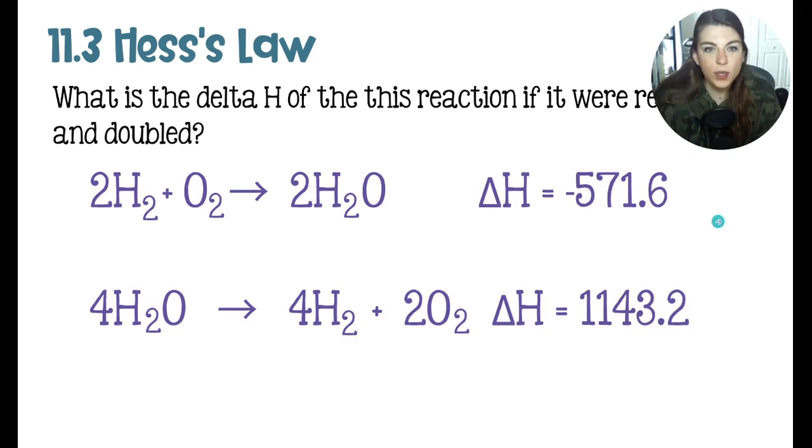So first off, flipping the reaction. If we had flipped it, instead of having the synthesis of water, we would have the decomposition of water, which is going to switch water from being a product to being a reactant. But we have also doubled this reaction. So I have gone through and doubled all of the coefficients. In doing that, I have not only doubled this 571, but I flipped that negative into the positive. And that gives us 1143. You just flip the reaction, you flip the sign. If you double the reaction, you double the delta H. If you half the reaction, you half the delta H.